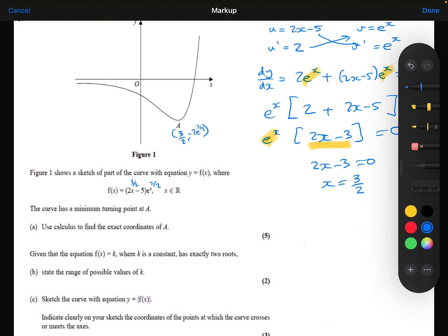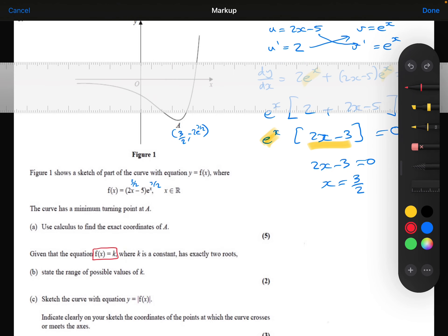We're then told that given the equation, f of x is equal to k, where k is a constant, has exactly two roots. So let's think about what that would look like, f of x equals k. So we've already got the f of x function drawn on here. Let me draw the y equals k function as well. So y equals k would just be a straight line.